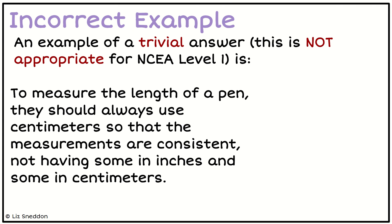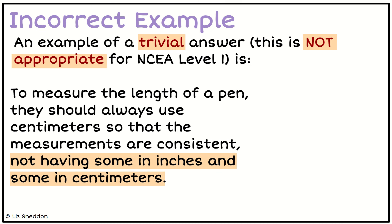Here's an incorrect example — what we call a trivial example. It's not deep enough and doesn't give us enough information to meet the criteria for the standard. For instance, saying 'if I want to measure the length of a pen, I need to use centimeters and always use centimeters rather than sometimes switching to inches' — that identifies a source of variation but it's not sufficient for NCA level one.